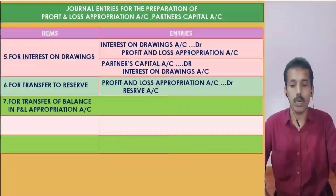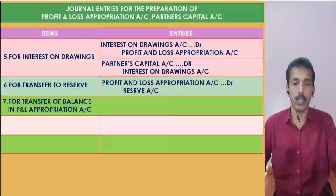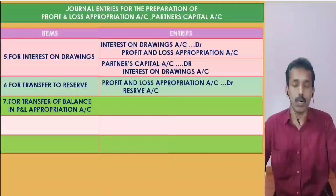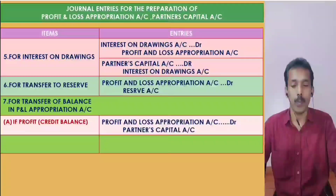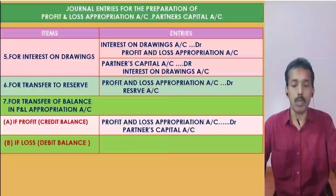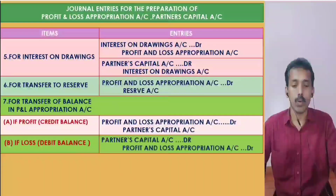For transfer of closing balance in Profit and Loss Appropriation Account: if there is a Divisible Profit, Profit and Loss Appropriation Account Dr., to Partners' Capital Account. If there is a Divisible Loss — that is, a debit balance — Partners' Capital Account Dr., to Profit and Loss Appropriation Account.